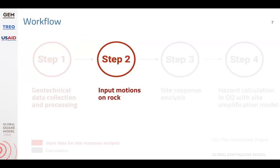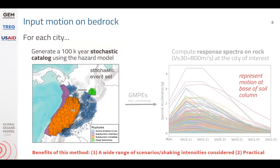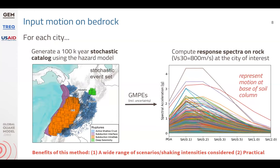In the second step, we defined input motions on bedrock. A requirement to perform site response analysis is to define the input motion at the base of the soil column. To do this for each city, we generated a 100,000-year stochastic catalog using the underlying hazard model, then using the GMPEs that were part of the hazard model including their aleatory uncertainty, we computed response spectra on rock at each of the cities. These represent the possible motions at the base of the soil column. The benefit of this method is that a wide range of scenarios and shaking intensities were considered, and it's a practical method because it only relies on having an underlying hazard model.